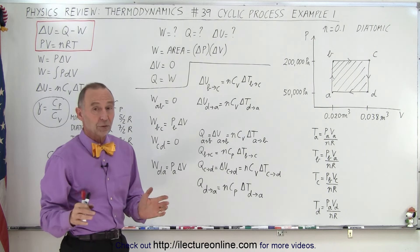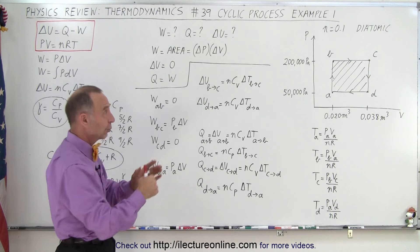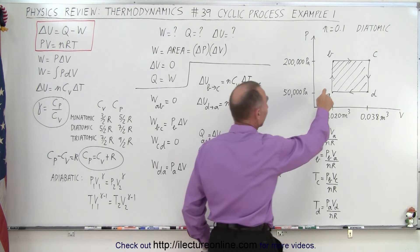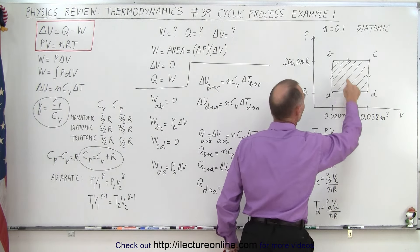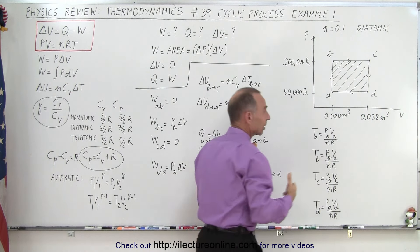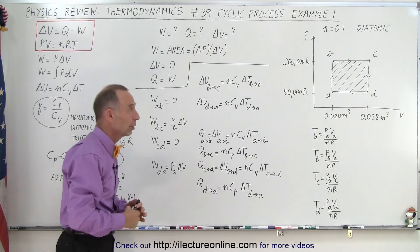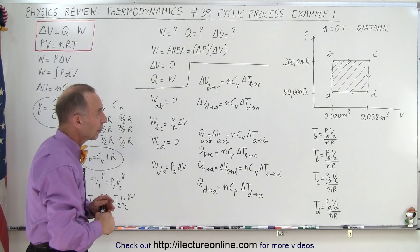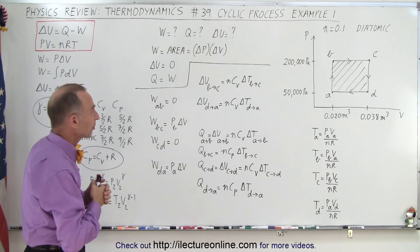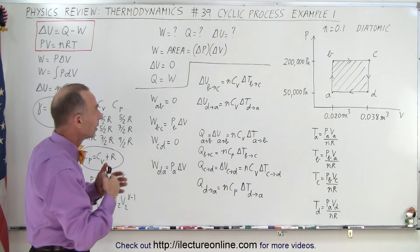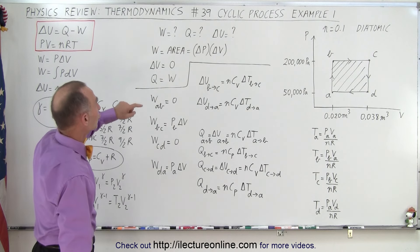In any cyclic process, regardless what type of processes we have, so here you can see we have two isovolumetric processes and two isobaric processes, but there could be any combination of the four thermodynamic processes. But in any case, regardless which thermodynamic processes we have in the cycle, this is always true.